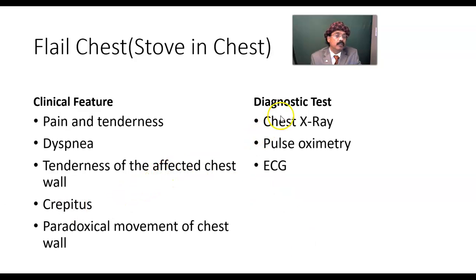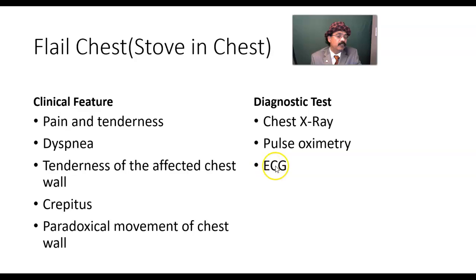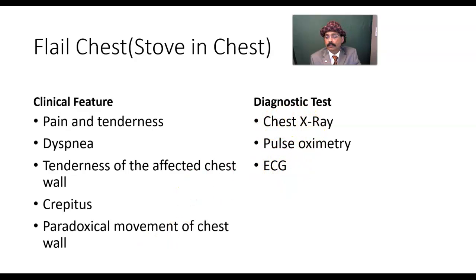For diagnostic tests, the gold standard is chest X-ray — both the posterior-anterior view and the oblique view. Pulse oximetry is also very important. ECG may be taken to rule out arrhythmia or any other cardiac problem associated with flail chest.